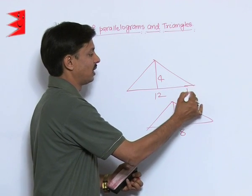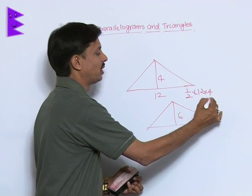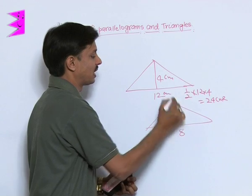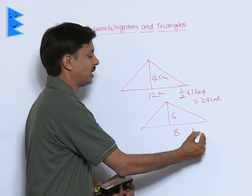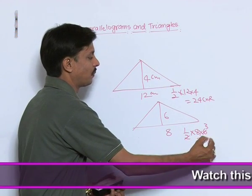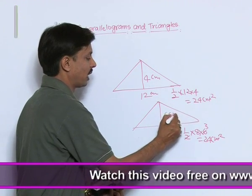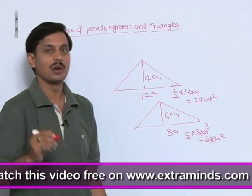Area of this triangle is half 12 into 4, that is 24 centimeter square, if sides are in centimeter. And about this triangle, area is half into 8 into 6, that is again 24 centimeter square. But you can observe that these two figures, these two triangles are not congruent.